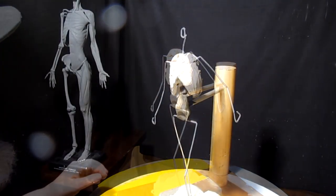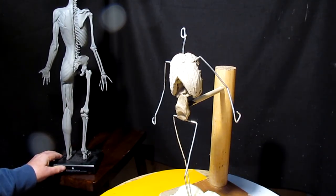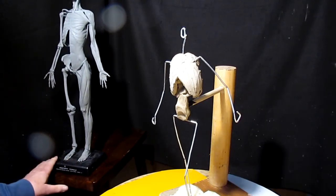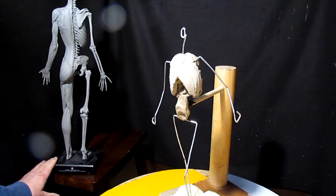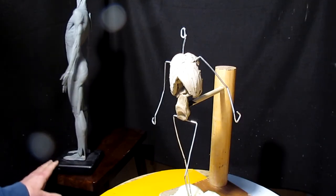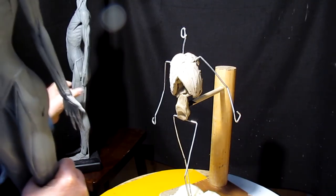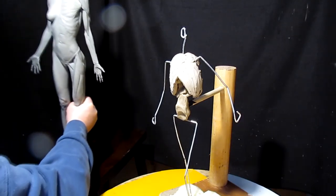I've got my mannequin maquette, whatever you want to call it, set up here to guide me as far as proportions and the structure of the muscles and the bone structure and all that stuff. I've got another one here. Let me replace this one. You can buy these online.